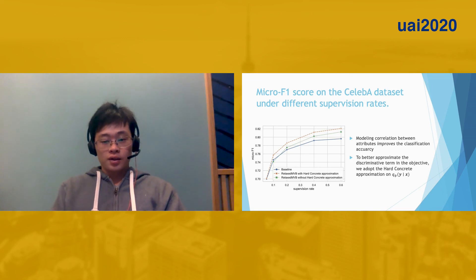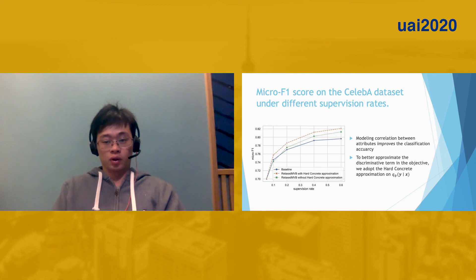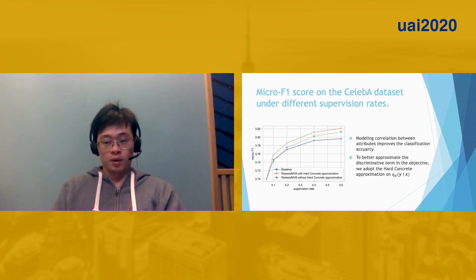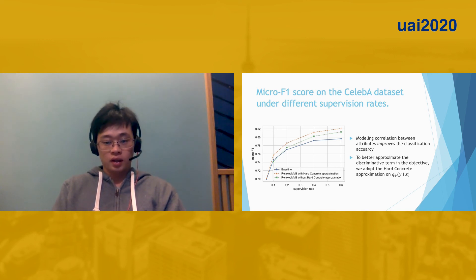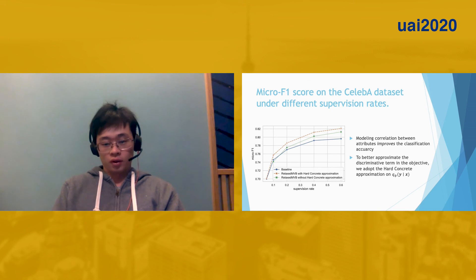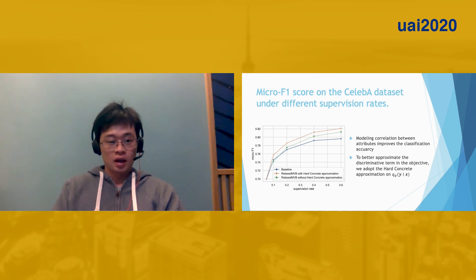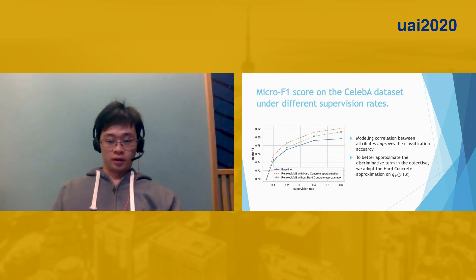Here are the experiment results. Clearly, by capturing correlation between different attributes, we are able to achieve better classification accuracy. I would also like to mention that in experiments, to better approximate the discriminative term in the objective, we further adopt the hard concrete distribution on Q(Y|X). You could refer to our paper for more details on this part.